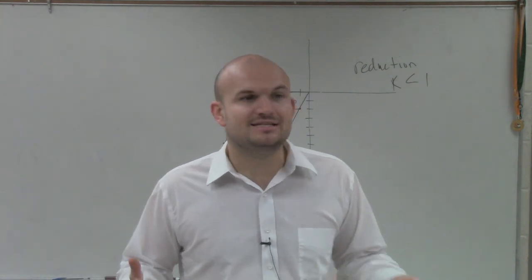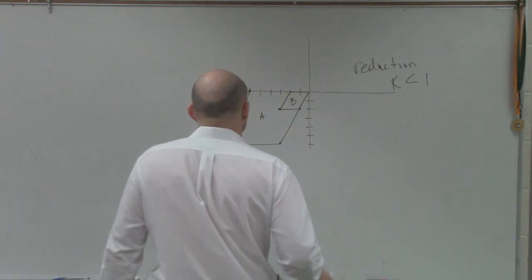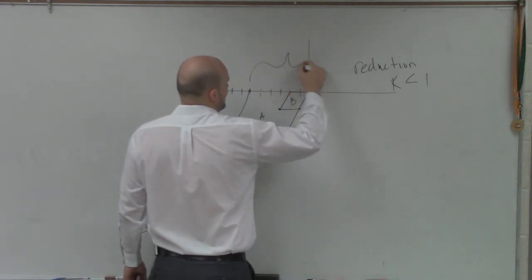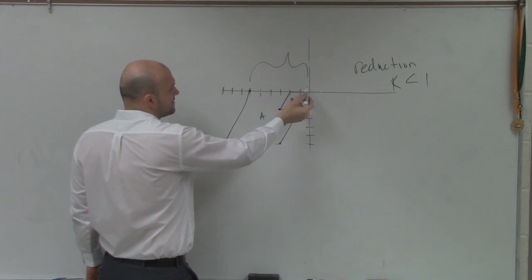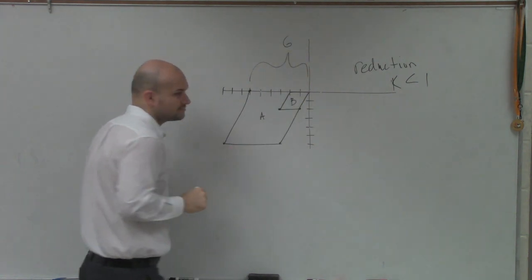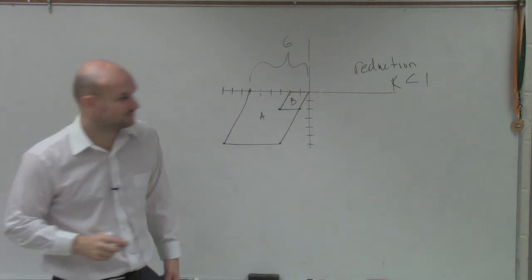So to figure that out, we need to create a ratio. So let's figure out what is the length of A. So A is 1, 2, 3, 4, 5, 6. B, what is the length of B? 2.